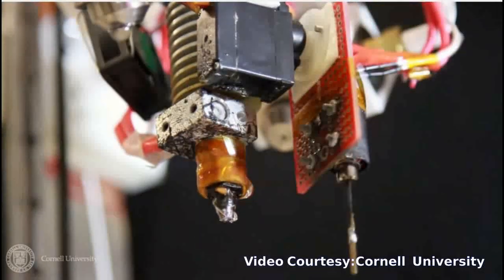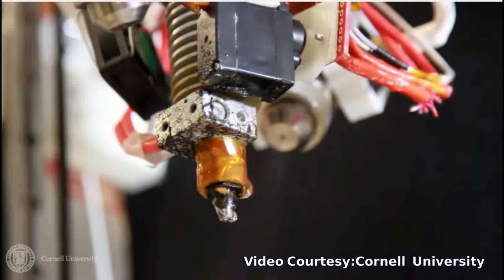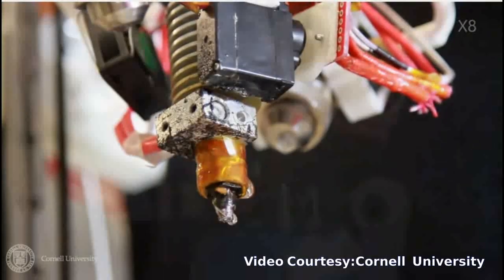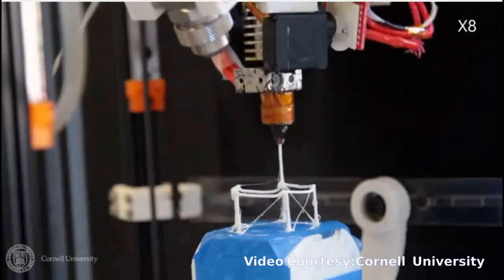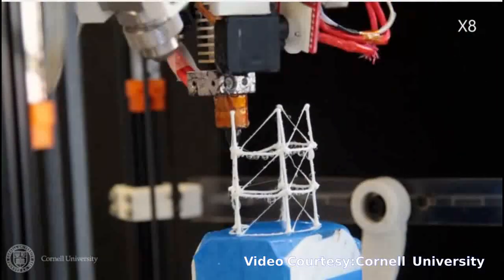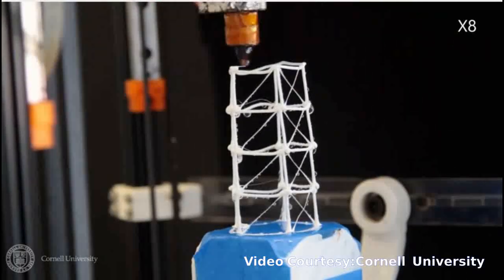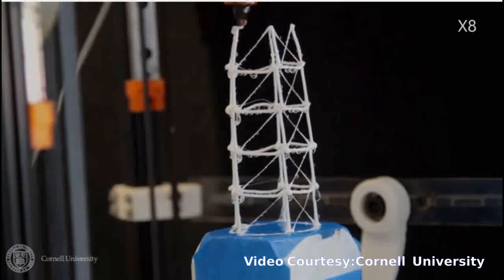Cornell researchers have come up with an interactive prototyping system that prints what you are designing as you design it. The designer can pause anywhere in the process to test, measure and, if necessary, make changes that will be added to the physical model still in the printer.